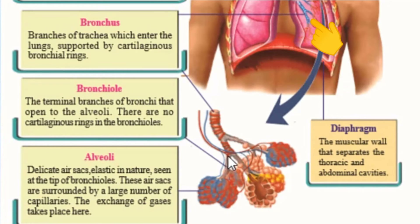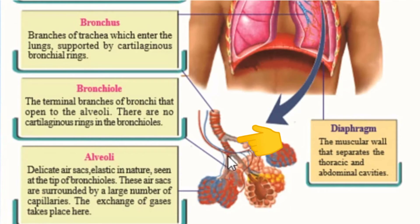The trachea and bronchus allow air to enter and remain open always. This is supported by cartilaginous rings. Bronchioles are the terminal branches of the bronchi that open to the alveoli. There is no cartilaginous ring in the bronchioles.